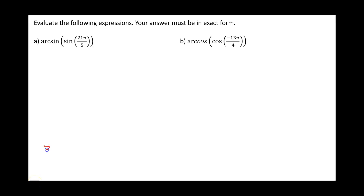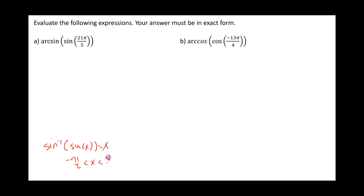Let's remember that if we have the inverse sine of the sine of x, it simply equals to x. But also remember that the output for an inverse sine has to be between negative pi over 2 and pi over 2.